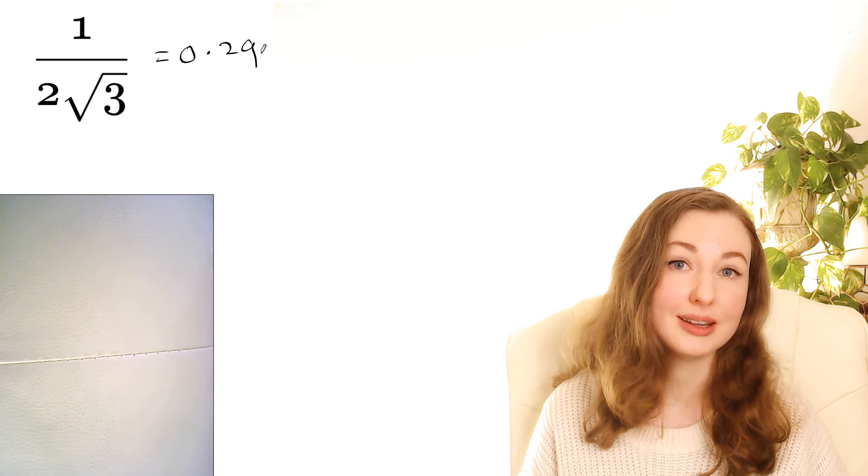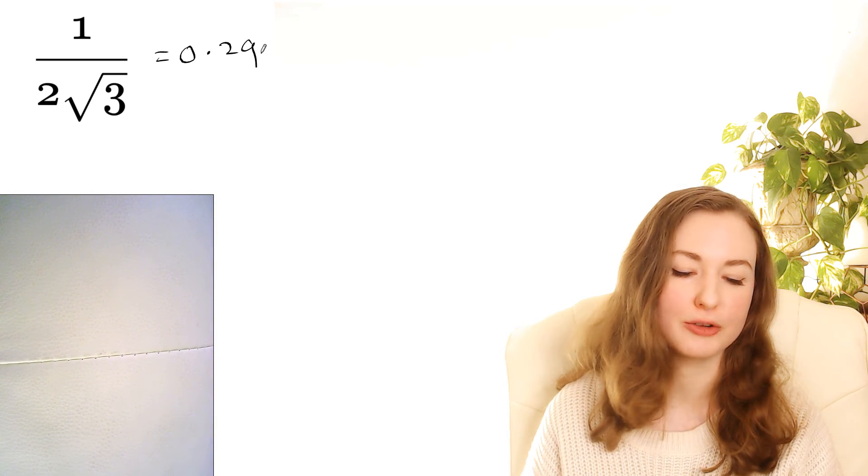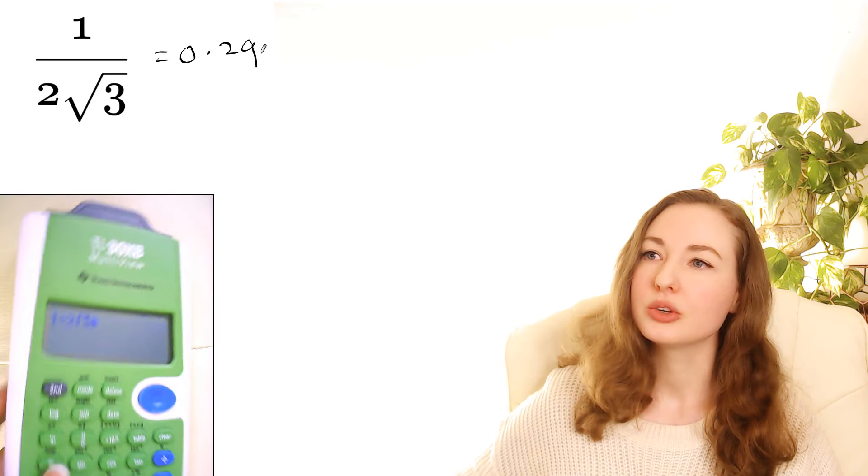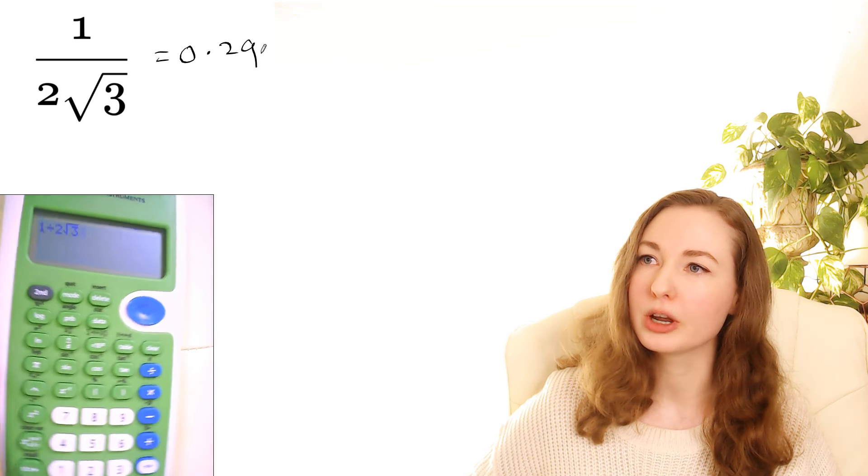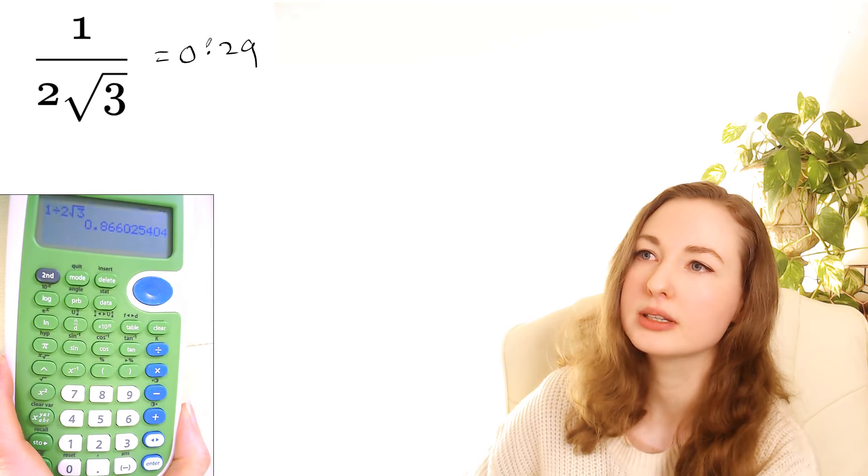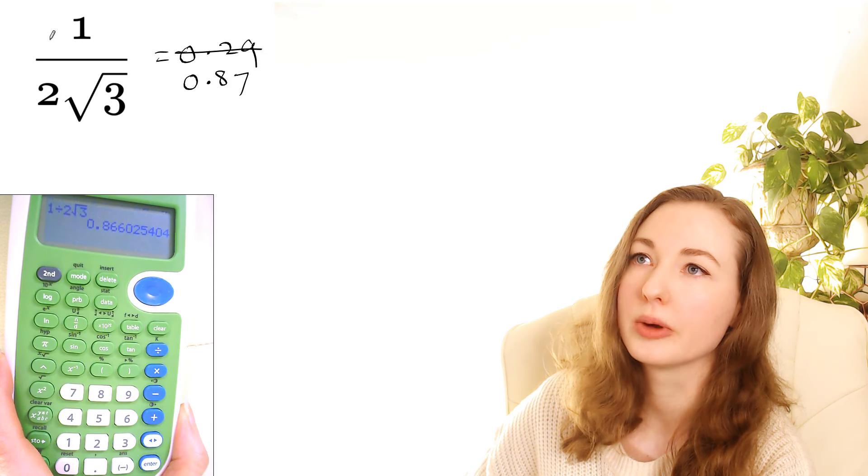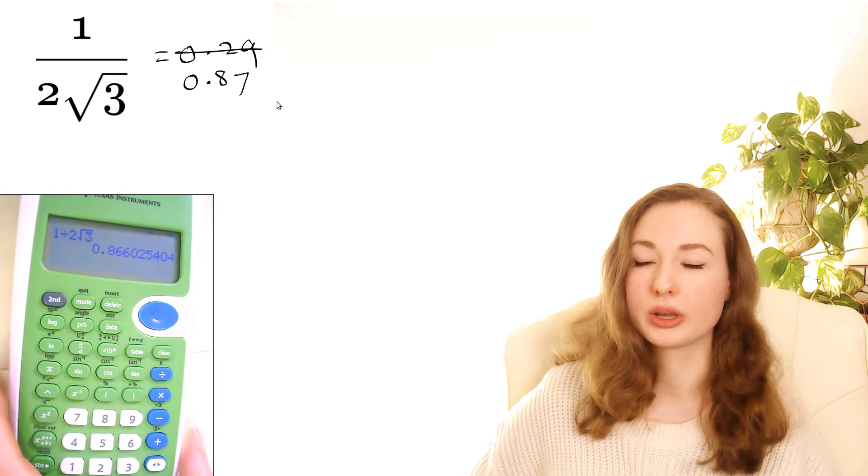But let's suppose on this particular day your calculator has run out of batteries and you borrow a friend's calculator. So you type it in as you normally would, 1 divided by 2 root 3, and hit enter and you get 0.87, which is incorrect if that's what you're trying to calculate.